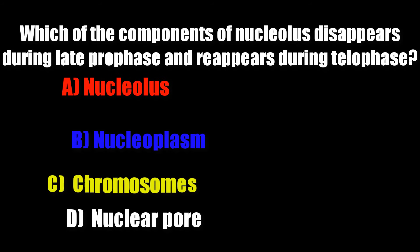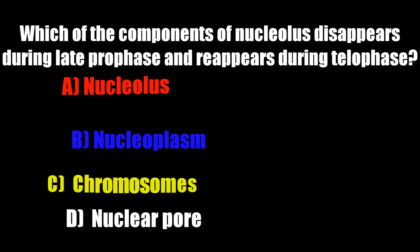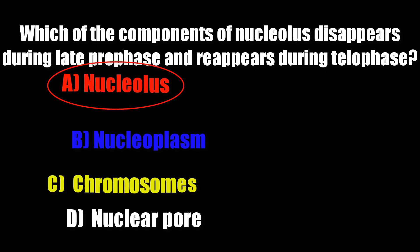Which of the components of nucleolus disappears during late prophase and reappears during telophase? Options: nucleolus, nucleoplasm, chromosome, nuclear pore. Correct answer is nucleolus.